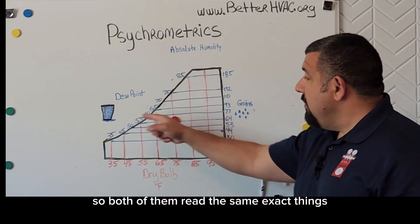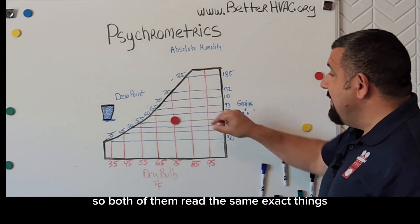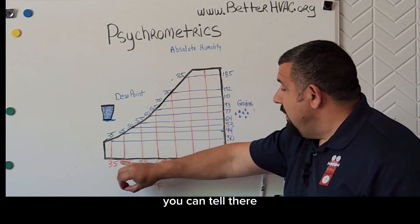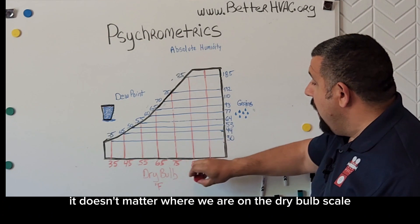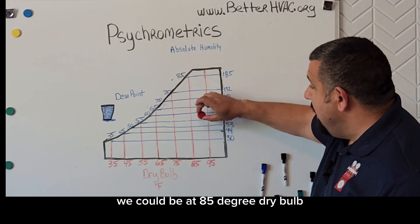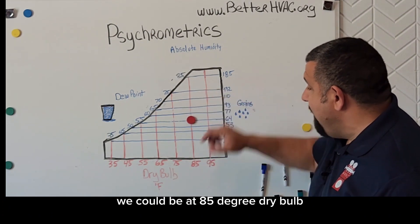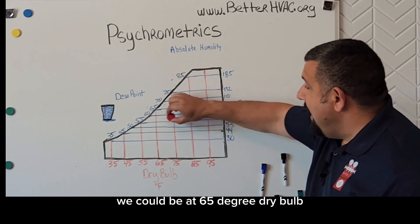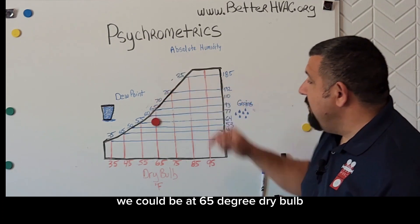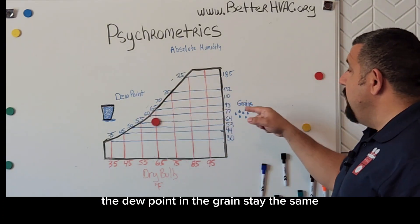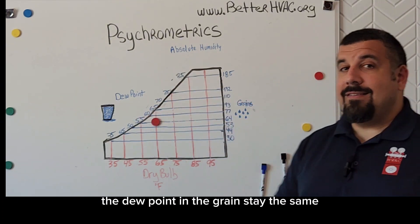Both of them read the exact same thing. You can tell it doesn't matter where we are on the dry bulb scale — we could be at 85 degree dry bulb or 65 degree dry bulb — the dew point and the grains stay the same.